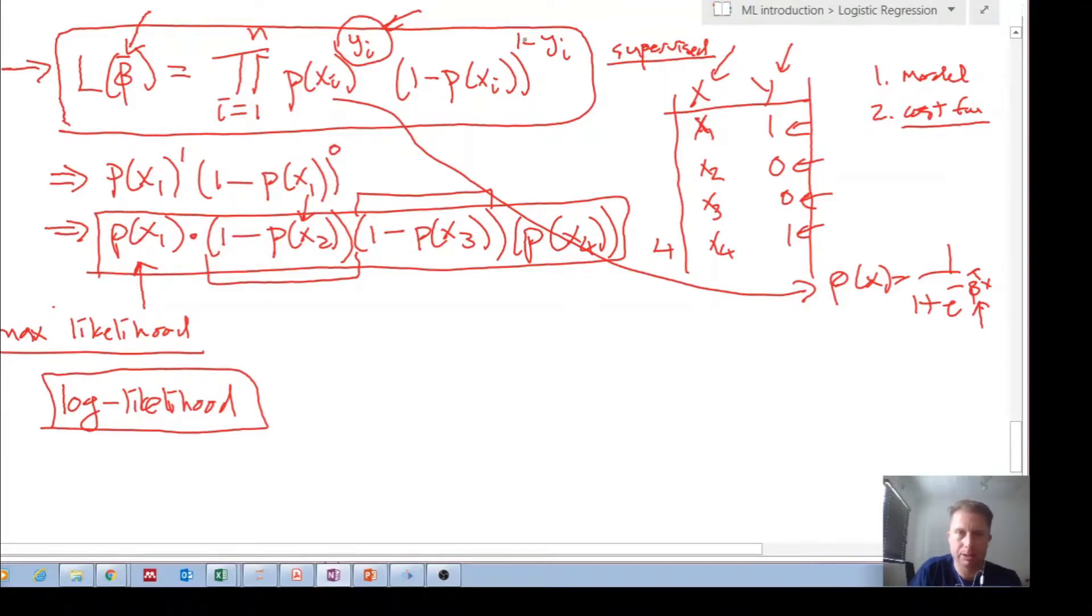Really, we saw because it's a supervised learning problem, if we plug one, if our actual output is one, then one goes in there, that becomes a one and this becomes zero, so this part falls away and we're left with the probability of x1. Then we move on to the next case or example. If the output is zero, then this guy falls away and we're left with this guy, one minus the probability of this case, this example, and so on and so forth.